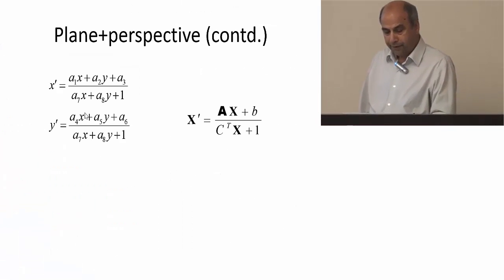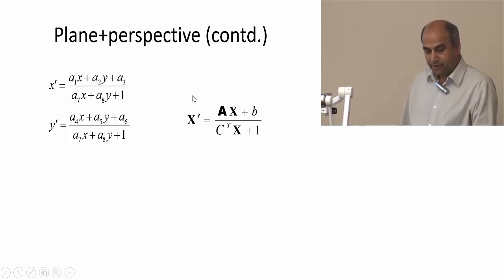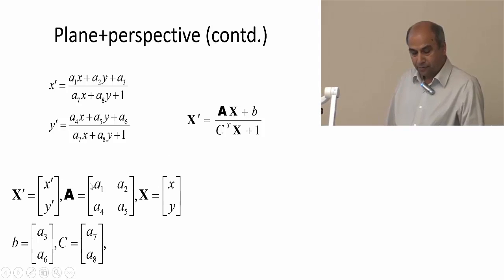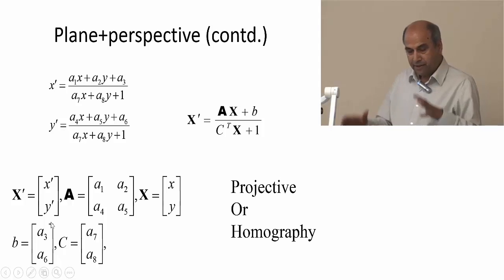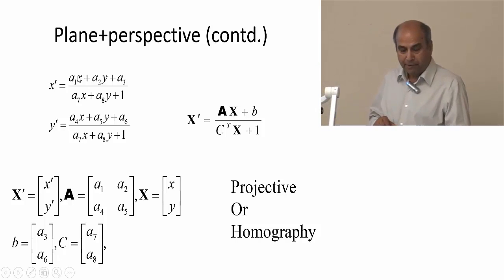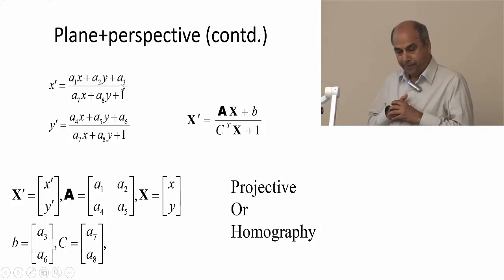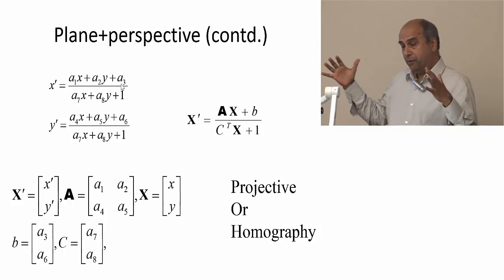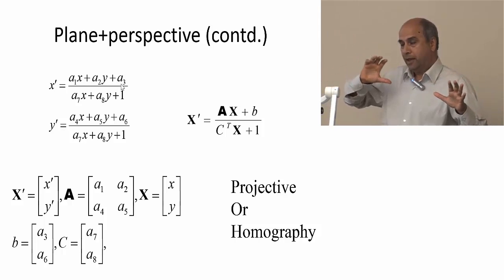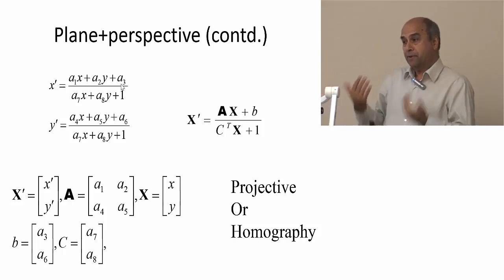Homography can also be written in matrix form as x' = (A*x + b) / (c^T * x + 1), where A is a 2x2 matrix, b is a 2x1 vector, and c is a 2x1 vector. This is a very important transformation between two images. Given a point (x, y) in one image, we can find the corresponding point (x', y') in the other image. These two images are related by the homography, derived using 3D rigid motion, a planar scene, and perspective projection.